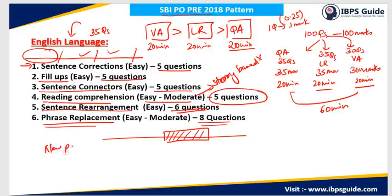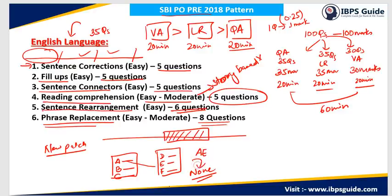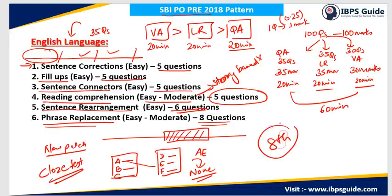In subsequent slots, there were new pattern questions like match-the-following type questions. There were two columns — the first column had three incomplete sentences and the second column also had three incomplete sentences. You had to match the sentences to form meaningful combinations. For example, if matching A and E forms a meaningful sentence, the answer would be AE. If no combination forms a meaningful sentence, there was an option 'none of these.' In one of the shifts, a cloze test was also asked. So if your exam is on 8th July, these topics will be very important — please try questions from these topics to score well in verbal ability.